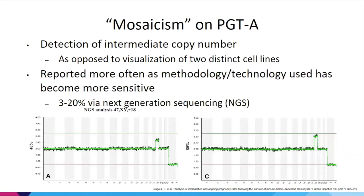When we talk about mosaicism on embryo testing, we're detecting an intermediate copy number — we're not actually visualizing two distinct cell lines. The data laboratories receive from NGS is a continuous signal rather than a binary call. Mosaicism is appearing more frequently as the technology becomes more sensitive, with current statistics indicating about 3 to 20 percent of samples may be found to be mosaic, varying by laboratory and embryo source.